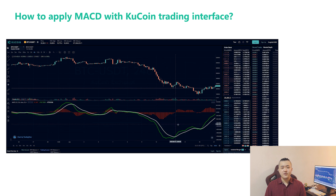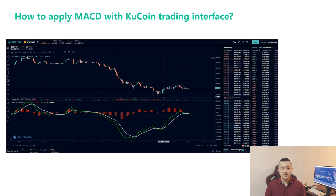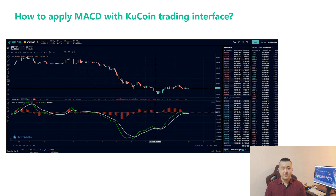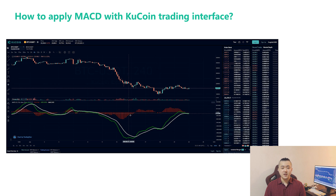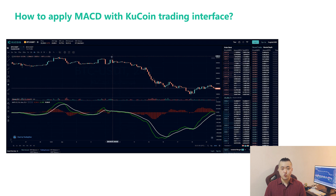How about the reversion of market trends? In this condition, we will talk about some classic trading examples. If the market trend is bearish but you discover that the Histogram is not deteriorating, that may indicate that the buying party is accumulating. In contrast, if the price is in a high position and you find that the Histogram is contracting, this is the signal to sell.